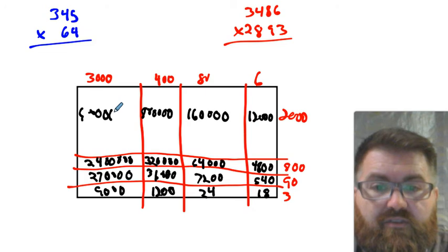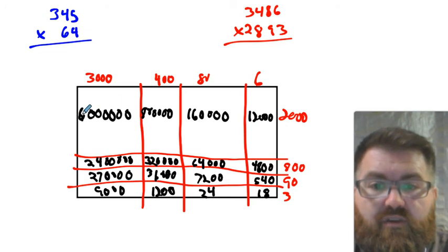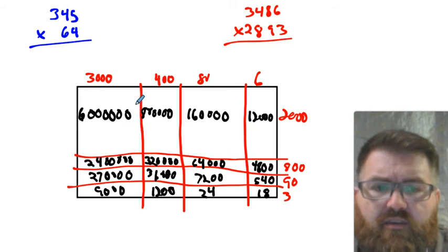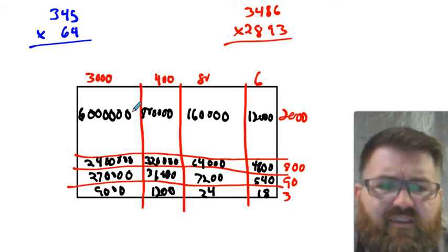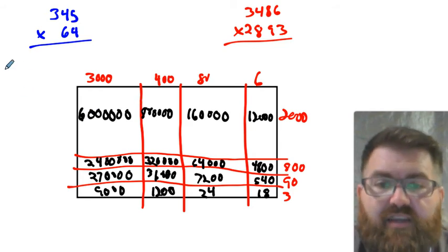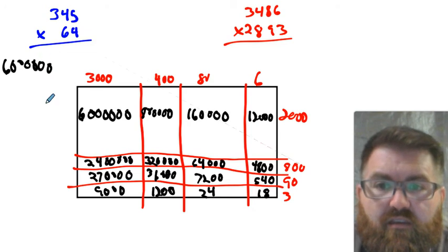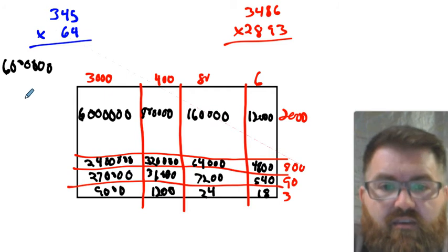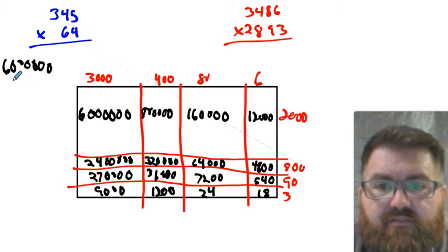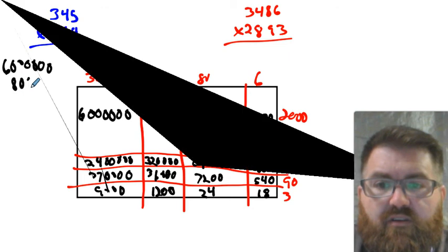It just keeps getting worse. The writing on screen is really a problem — oh boy. Maybe it's because there's so much writing on the screen. Anyway, we're going to add these together. That's going to be 6 million plus 800,000...